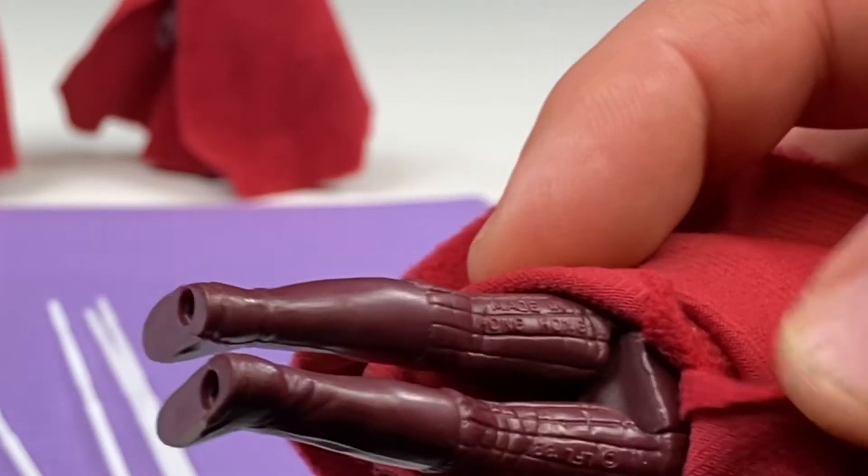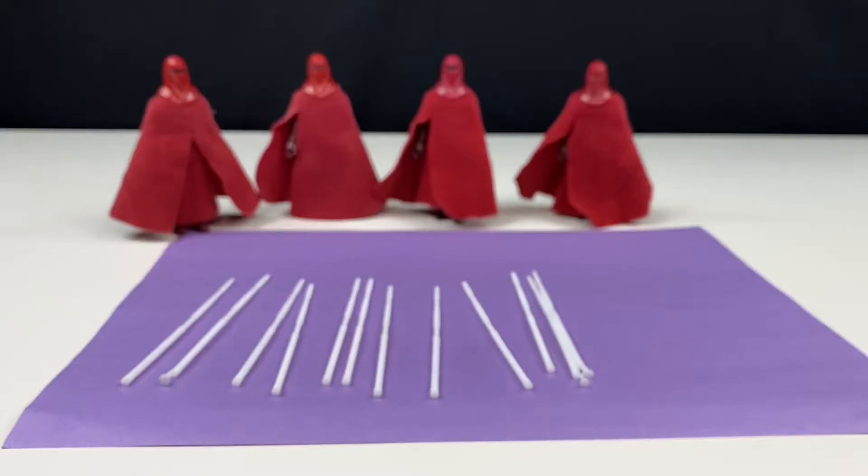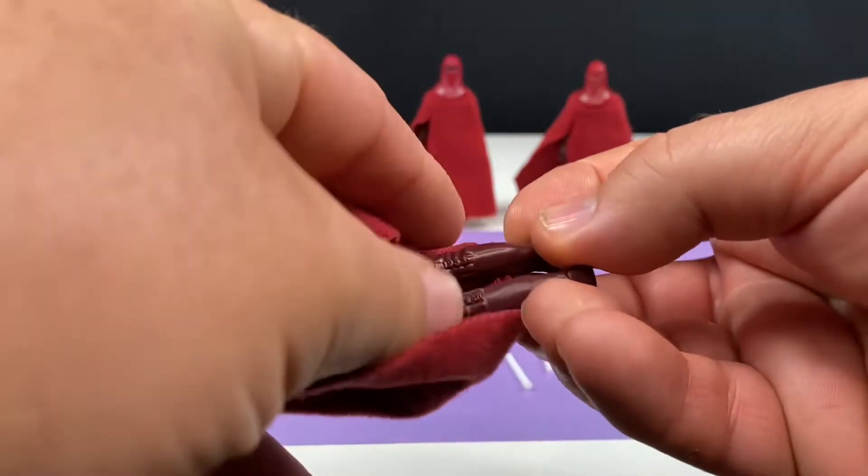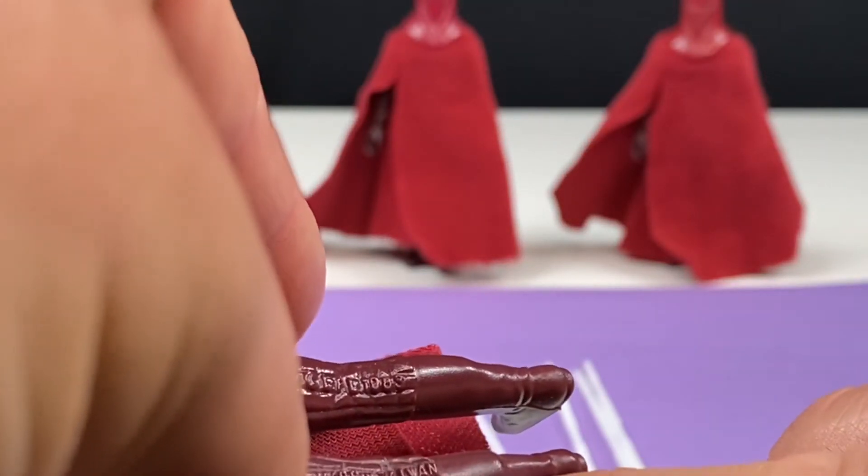You can see here it says 1983 Hong Kong on the back of the leg. And the figure on the left, you can see it says 1983 Taiwan, made in Taiwan.